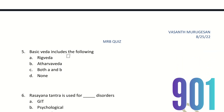Fifth question: Basic Veda includes the following. The choices are Rig Veda, Adarva Veda, both A and B, and none. Rig Veda and Adarva Veda are both known as basic Veda. So the right answer is option C — both A and B.